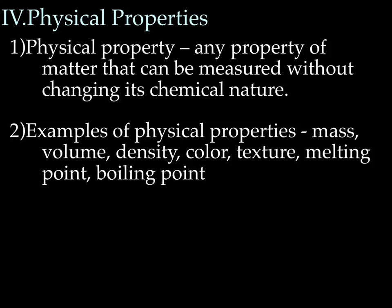A physical property is any property of matter that can be measured without changing its chemical nature — we're not going to change how something is made up, just how it looks. Examples of physical properties are mass, volume, density, color, texture, melting point, and boiling point. Physical properties are things you can taste, touch, feel, see, and describe — but not how something is made.